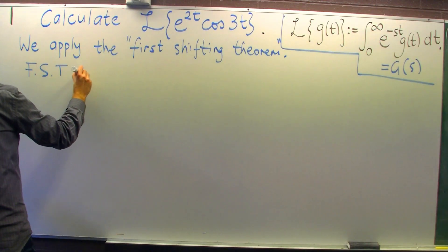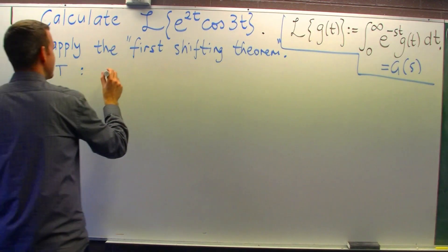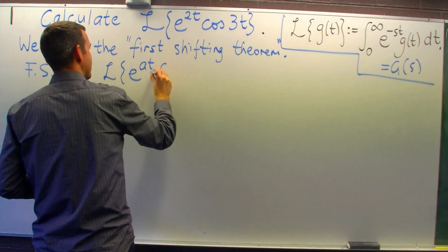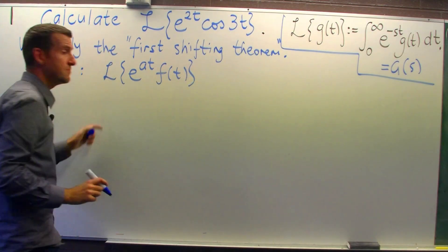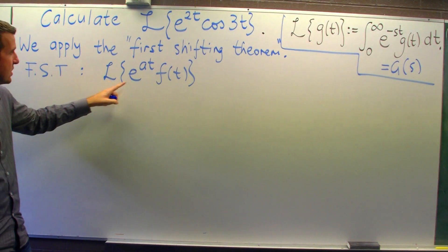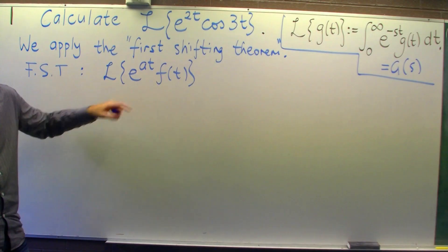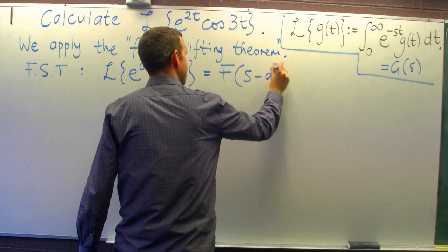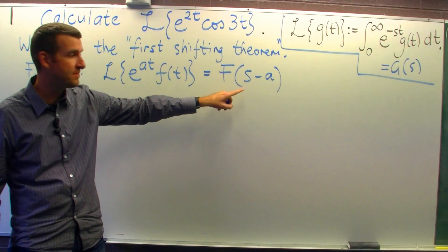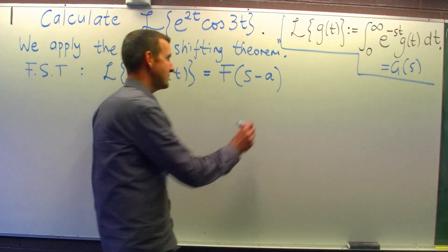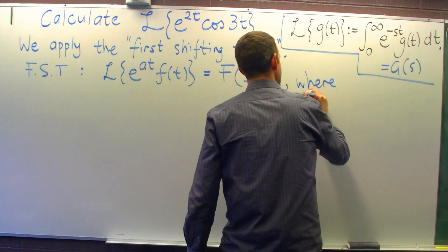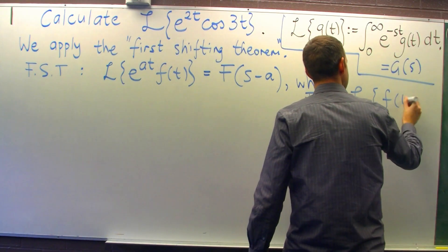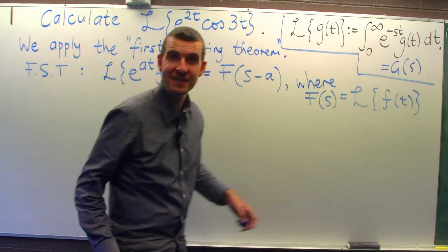So the first shifting theorem or the FST is the following. Suppose I want to take the Laplace transform of an exponential times a function of t. Here a is just some number, right? Then it's the following: it's equal to big F of s minus a. So what's big F? Well, big F of s is just the Laplace transform of f of t.